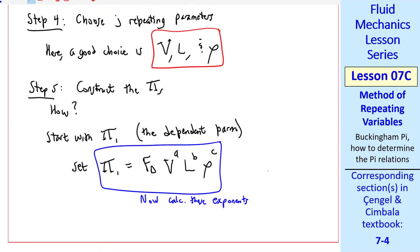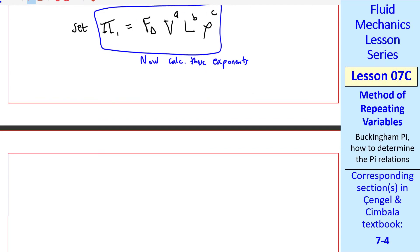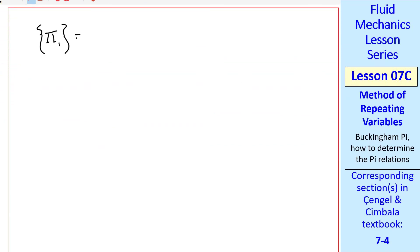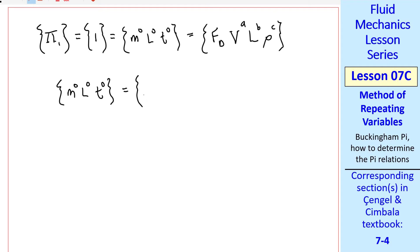Now the goal is to calculate these exponents, which are unknown. Here's where we get into some algebra. It's not difficult, but it's tedious. The dimensions of pi one have to be one, and since anything raised to the zeroth power is one, and we only have m, l, and t in this problem, I like to write it as m to the zero, l to the zero, t to the zero. And we had set up our pi one as this grouping, which I repeat here. Now we put in all the dimensions from step two: f, and then v to the a, l to the b, and density to the c. These are all the primary dimensions that we had listed in step two.